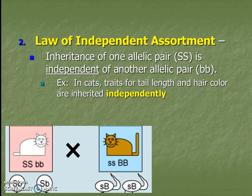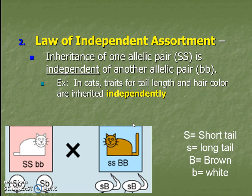They are all going to be independent of each other. For instance, this cat has white hair and a short tail; this cat has brown hair and a long tail. We can represent those different traits and whether they are dominant or recessive using uppercase and lowercase letters. Since capital S and lowercase s look similar, we should underline our lowercase s. The important thing is that tail length is inherited independently from hair color — they don't move together to the offspring.